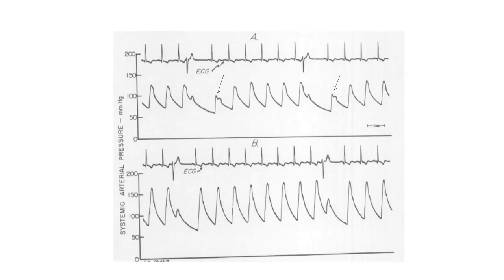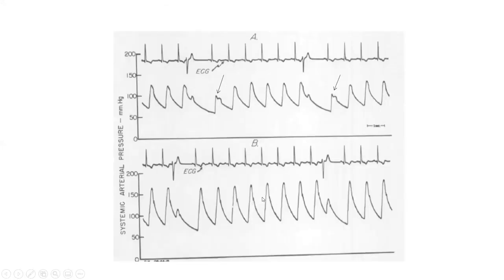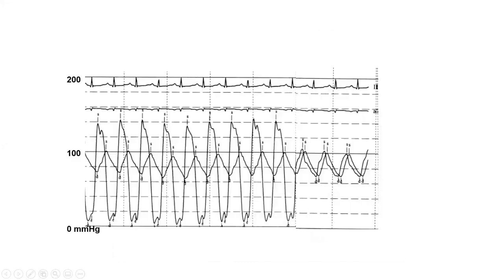In the same HOCM patient, after increasing preload (high-osmolality contrast from LV gram in old technique), there is no Brockenbrough phenomenon anymore — no spike-and-dome and no pulse pressure narrowing after a PVC. This demonstrates that increasing preload or afterload reduces the HOCM gradient, while increasing contractility or decreasing preload/afterload worsens it.